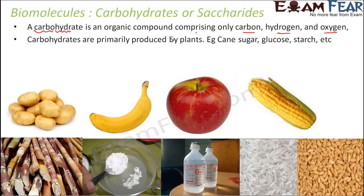You can have a look at the different food materials which are very rich in carbohydrates. For example, rice, apple, banana, vegetables like potato, germinating seeds, corn, glucose, starch, and sugar cane are all rich sources of carbohydrates. It is generally observed that most plant products are rich in carbohydrates.